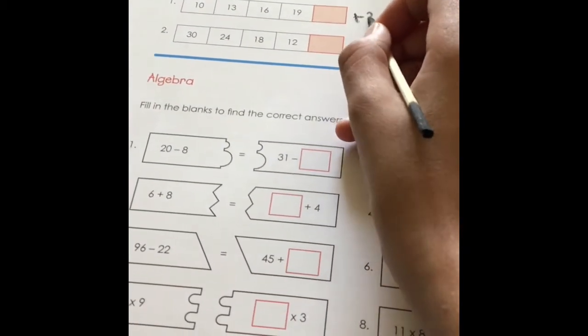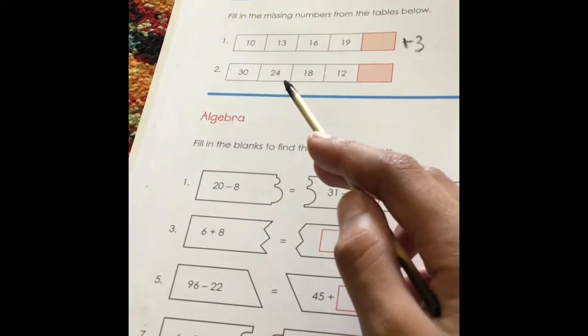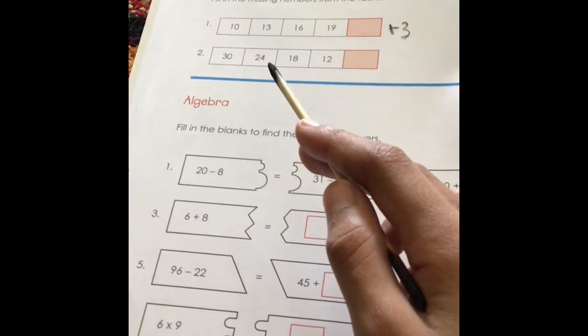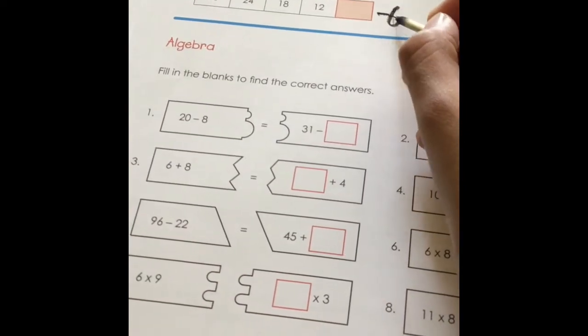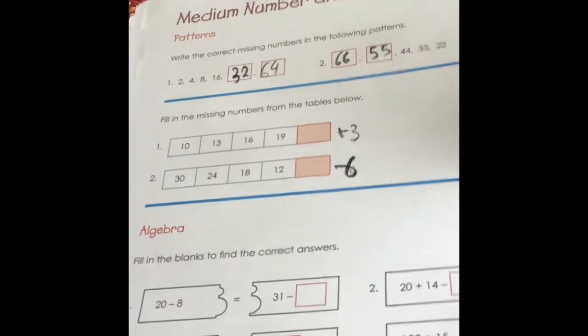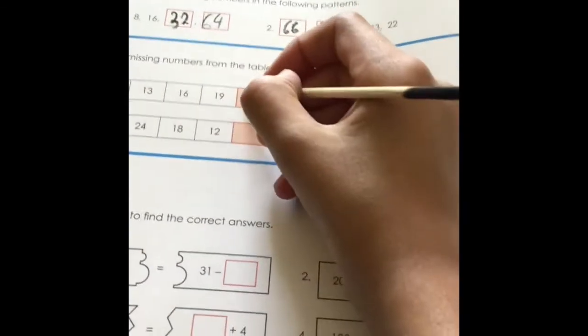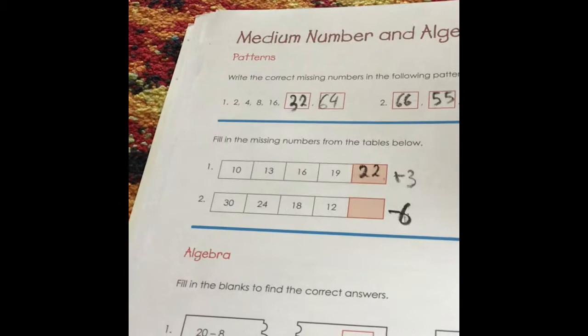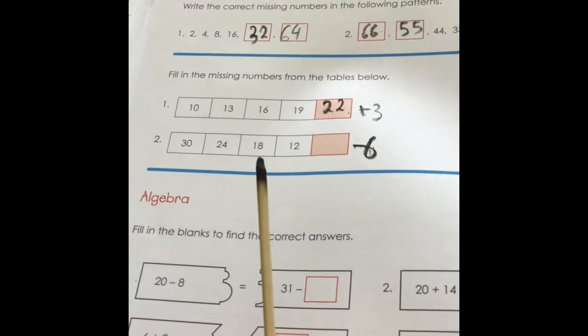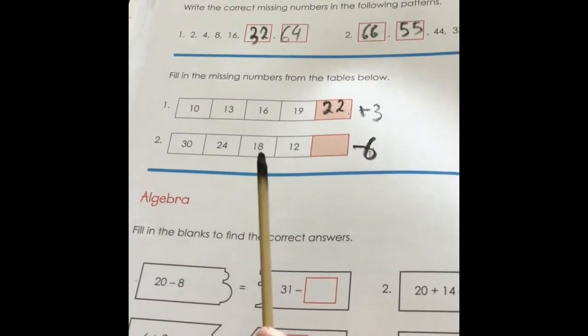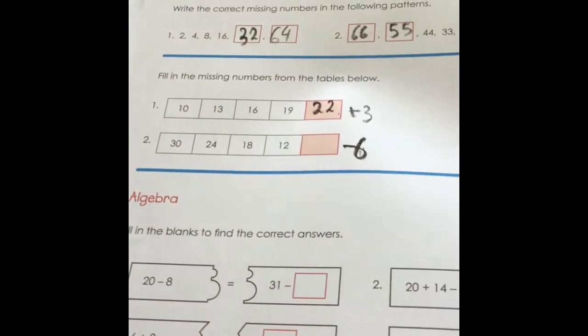Fill in the missing numbers from the table below. In this pattern they're adding the number 3. In this pattern they're subtracting 6. So what we're doing now is 10, 13, 16, 19. 19 plus 3 equals 22. 30 take away 6 equals 24, and 24 take away 6 equals 18, and 18 take away 6 equals 12, and 12 take away 6 is 6.